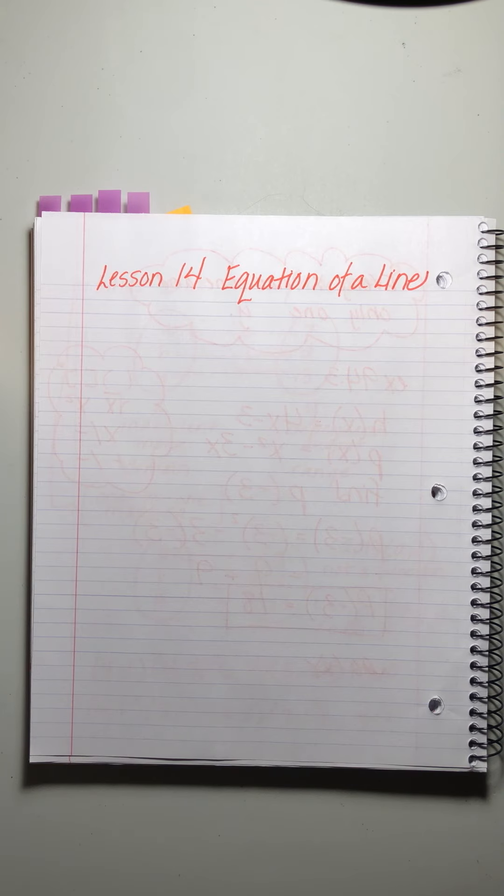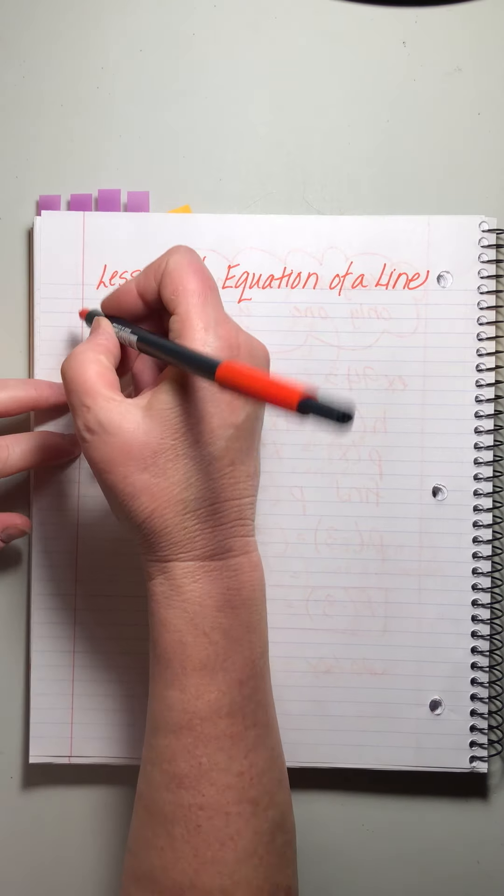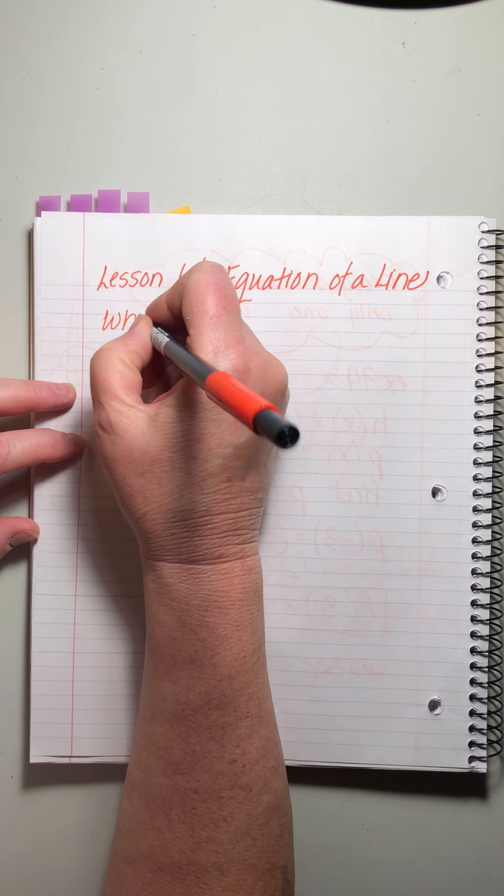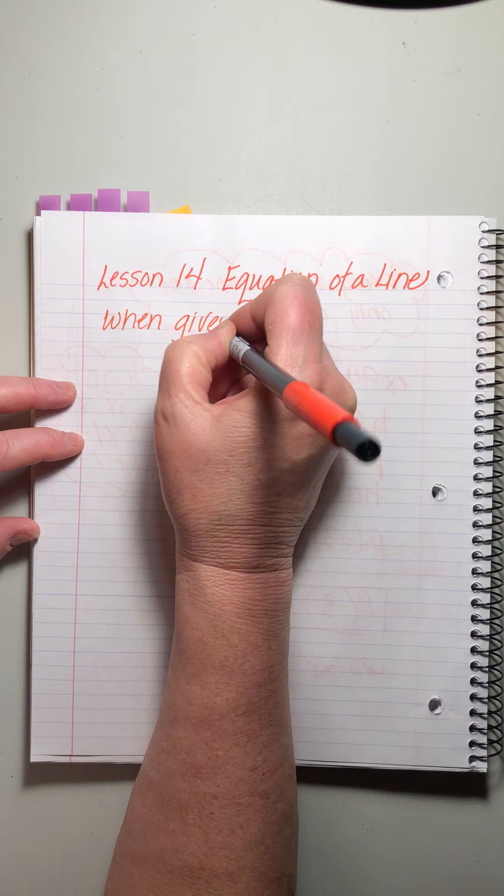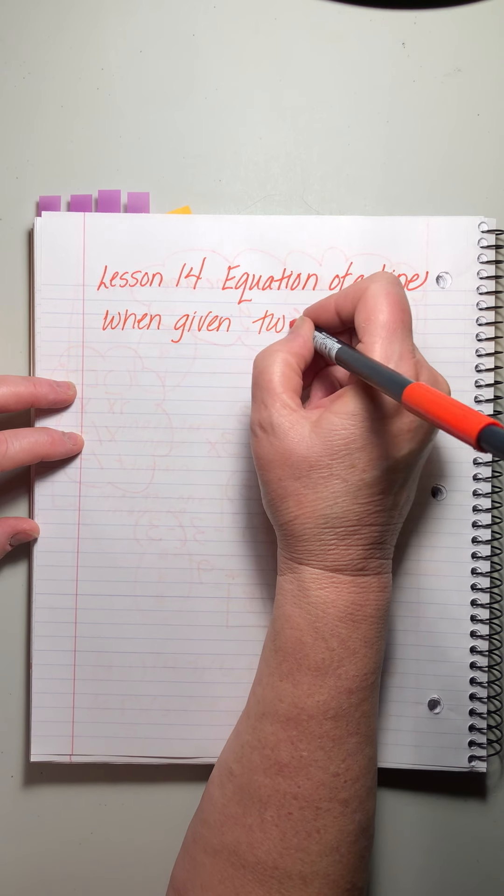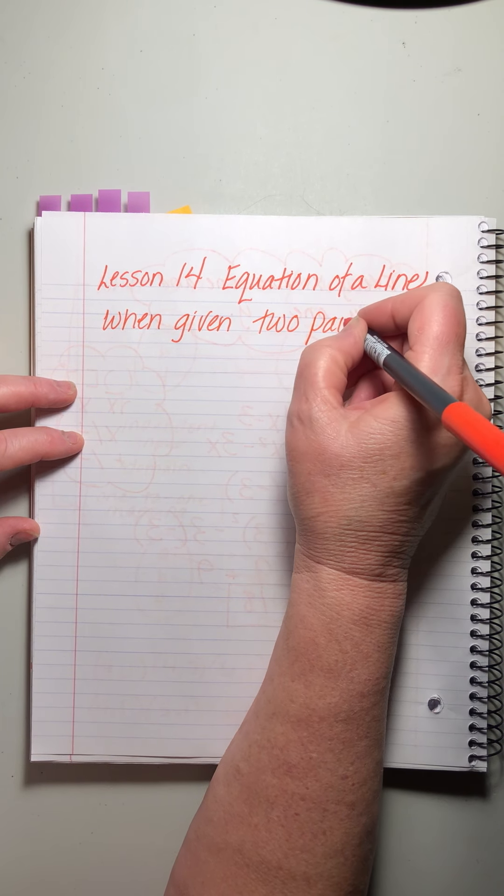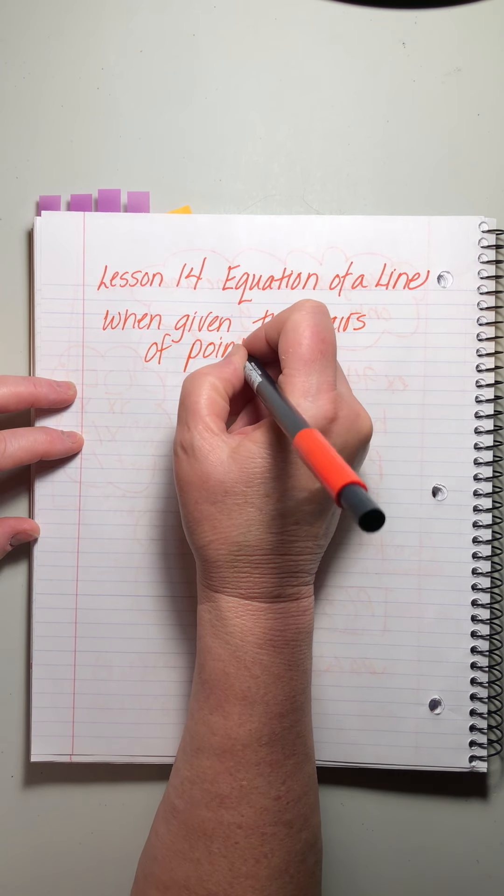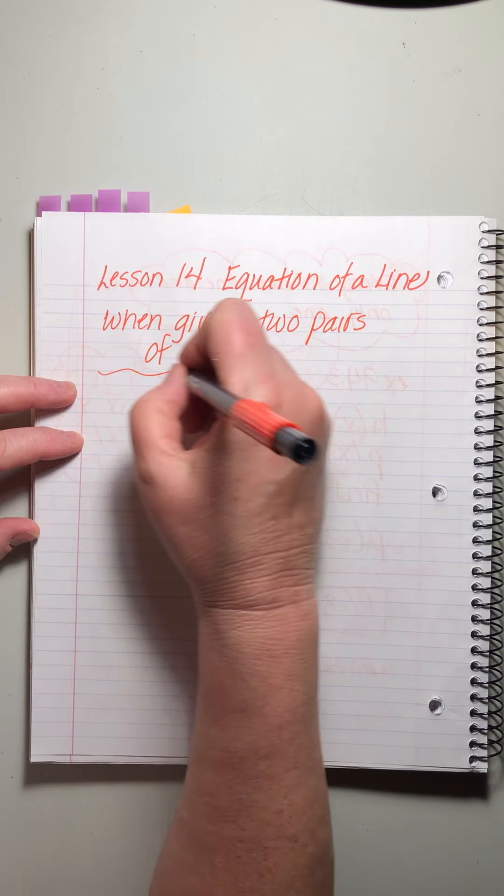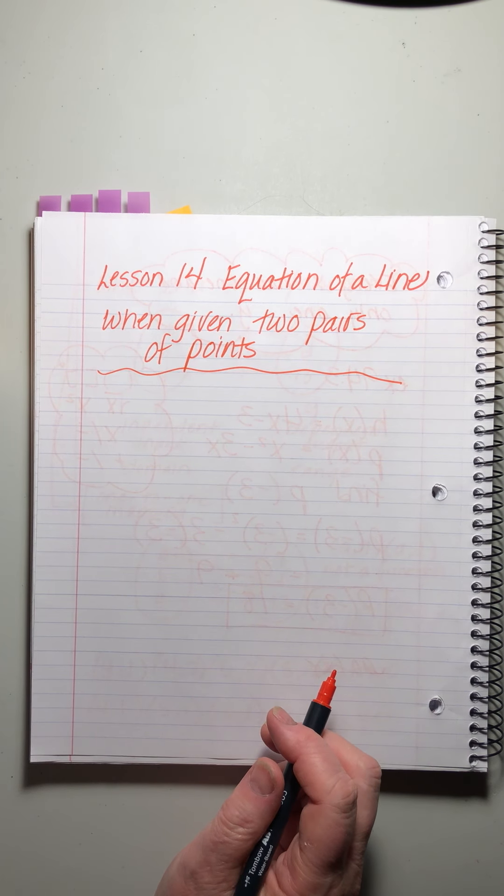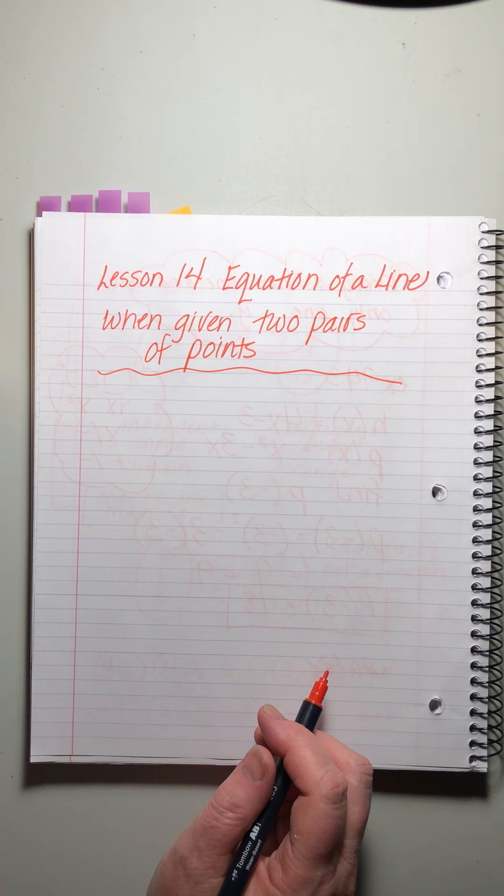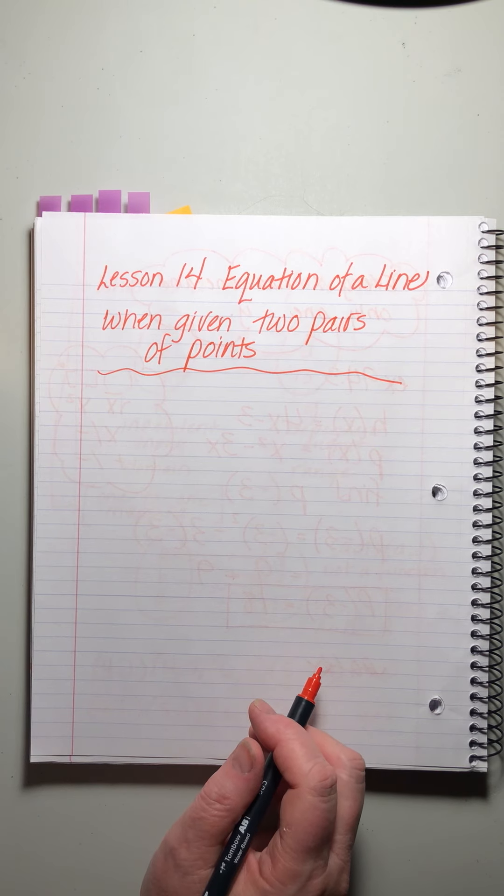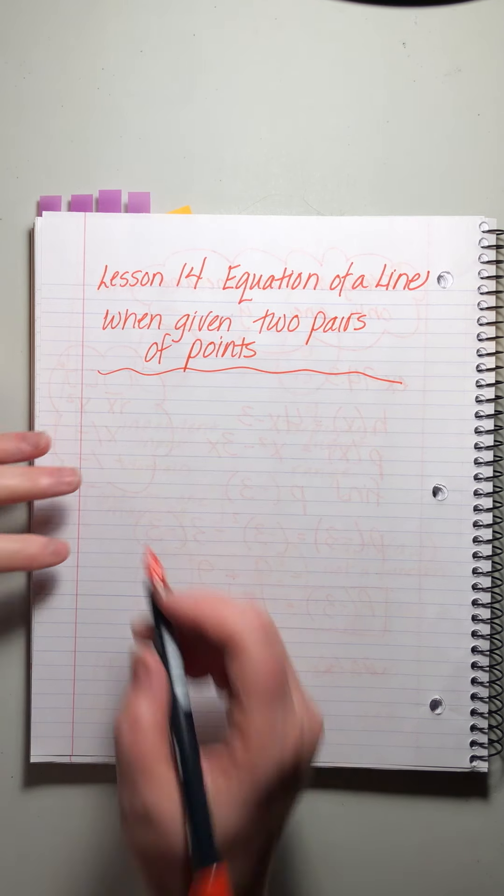This time, we are specifically talking about finding the equation of a line when given two pairs of points. Okay, so we're not looking at a graph. We're going to be given two pairs of points, and we're going to figure out how to turn that into the equation of a line.